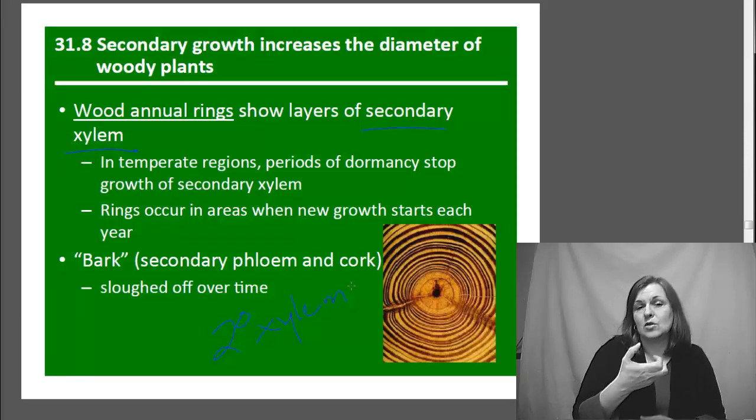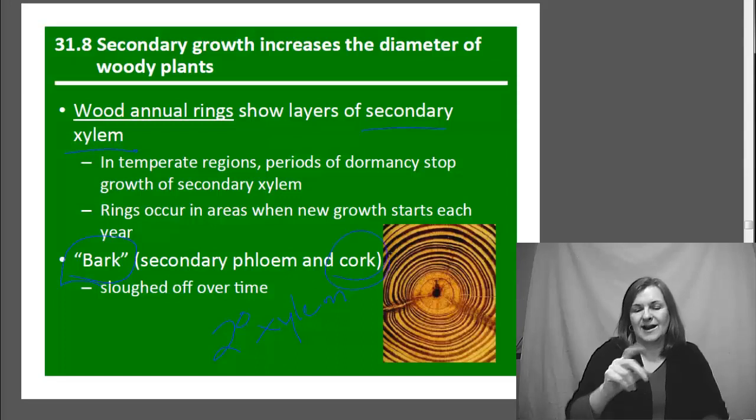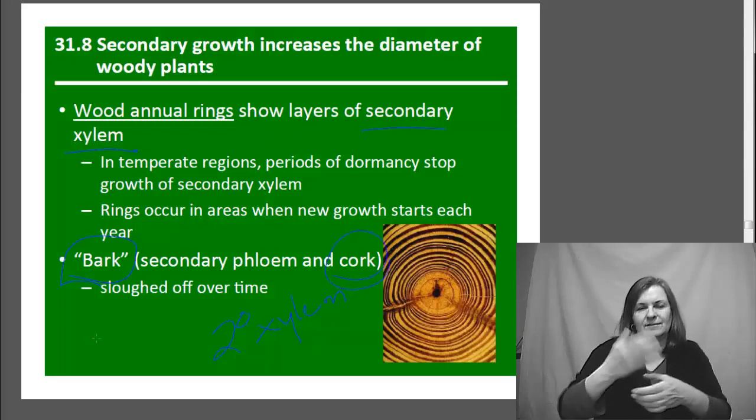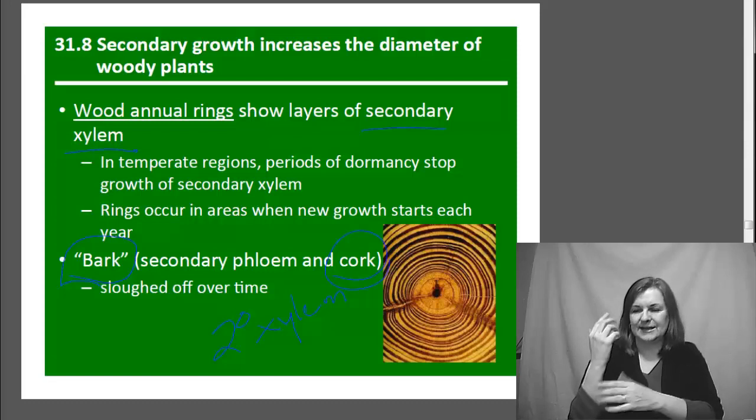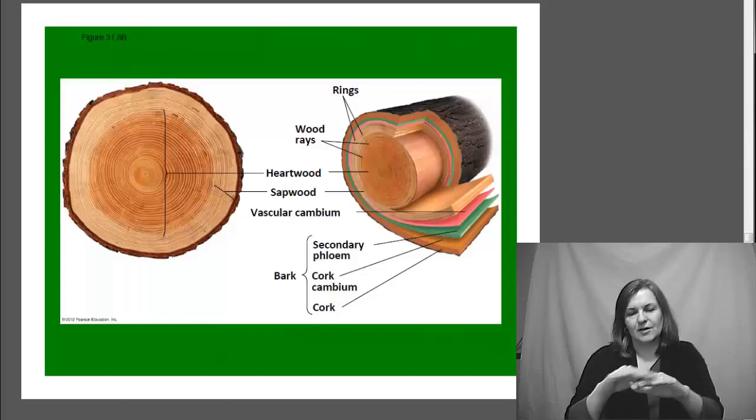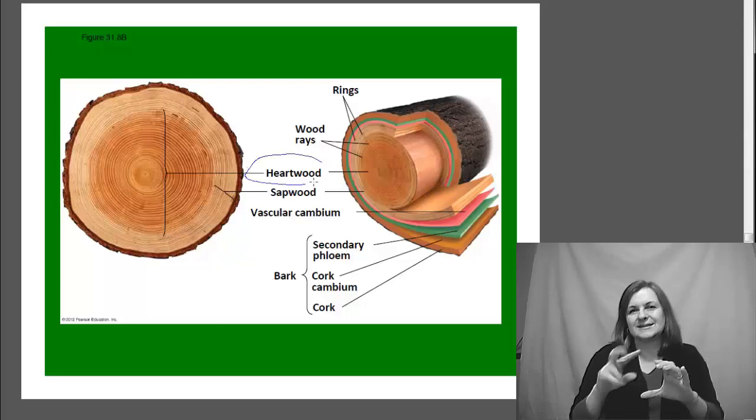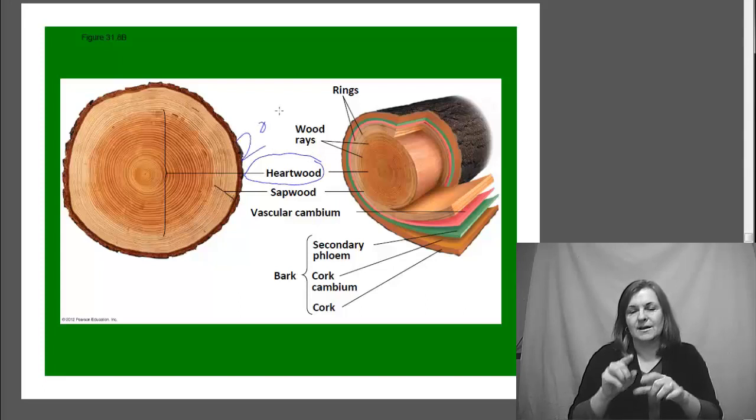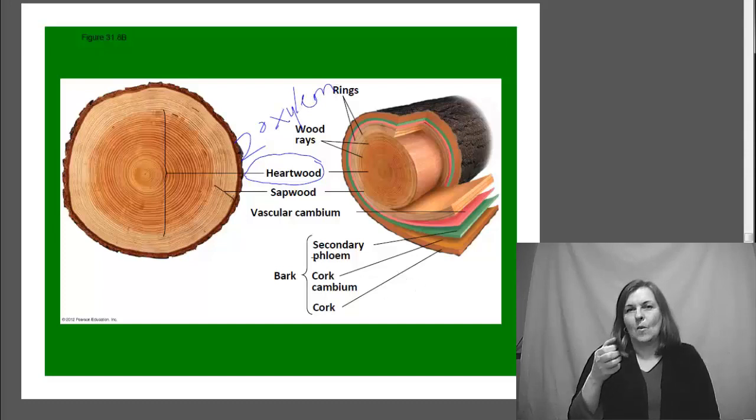Now, we also have secondary phloem, but it has a different purpose. The secondary phloem's purpose is actually to produce bark or cork on the outside of our tree to protect it in the environment. So when we see this, we have this kind of center part that builds up and this is where we have our secondary xylem. All of this inside is going to be secondary xylem. But on the outside, we have secondary phloem here associated with our bark.